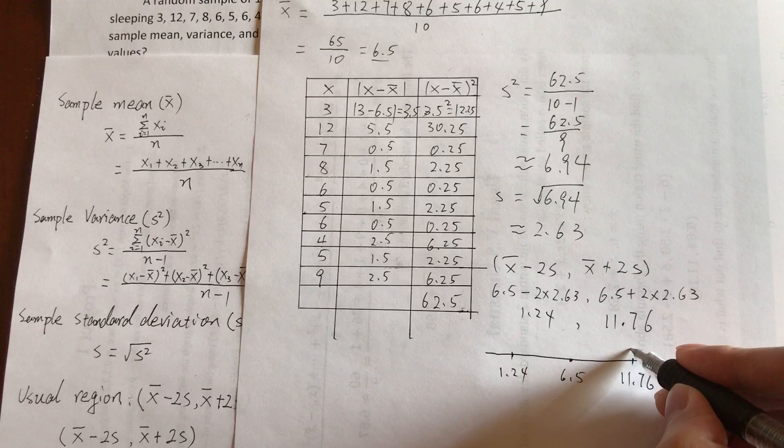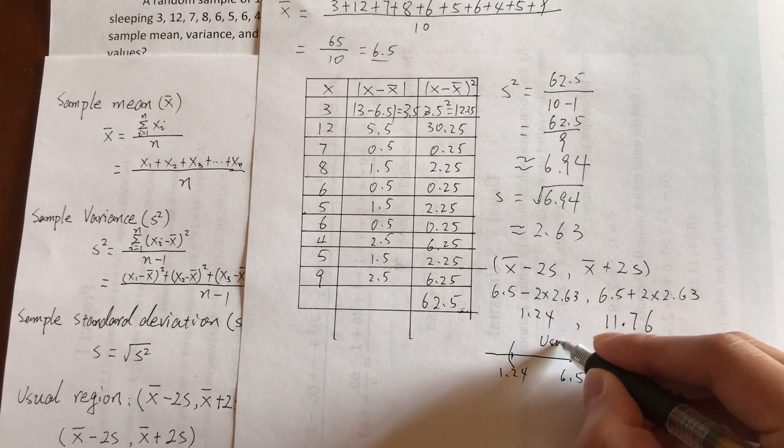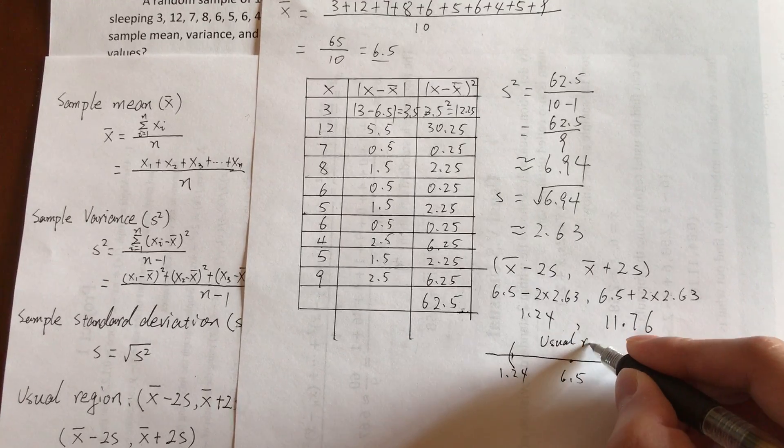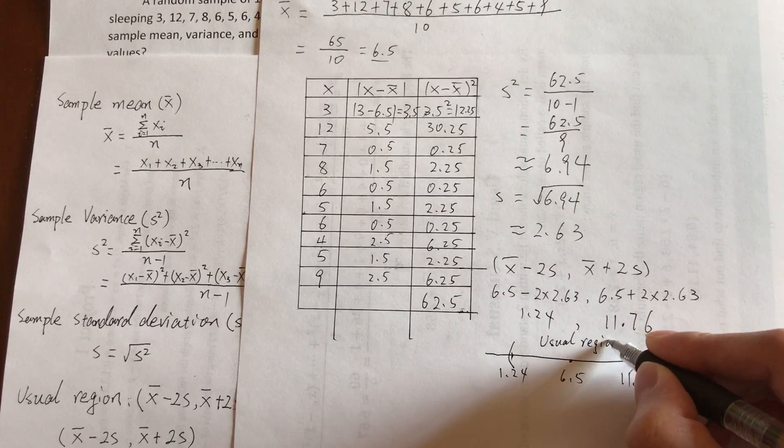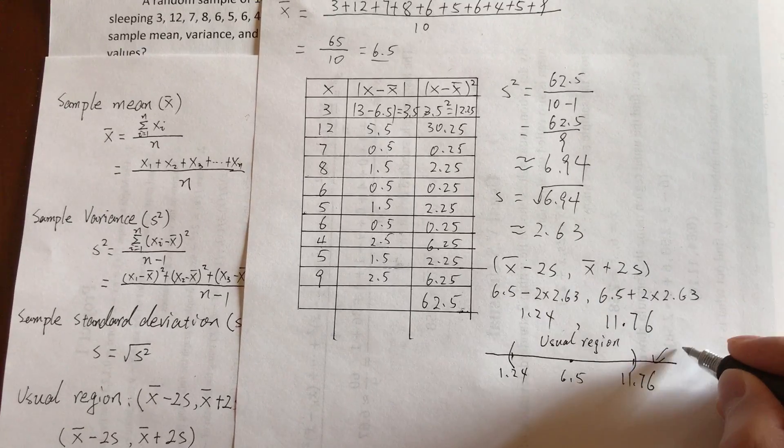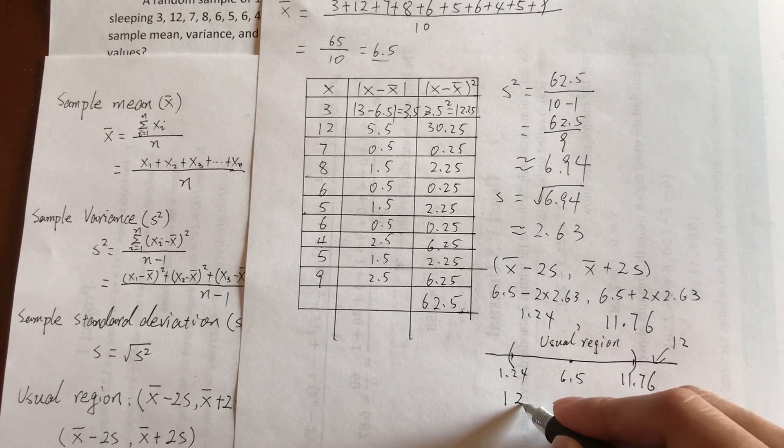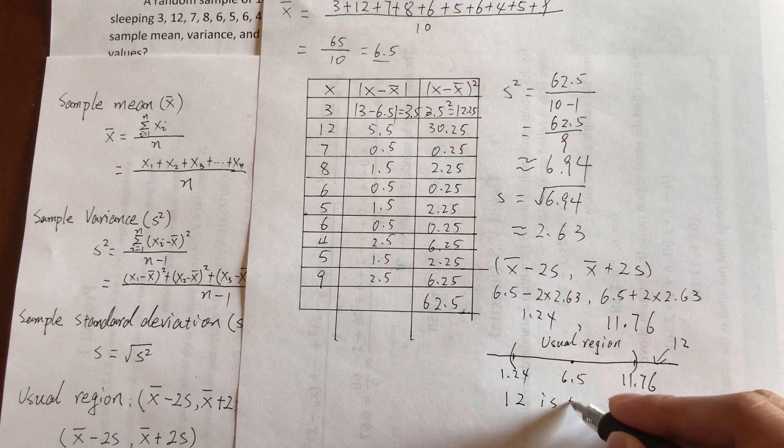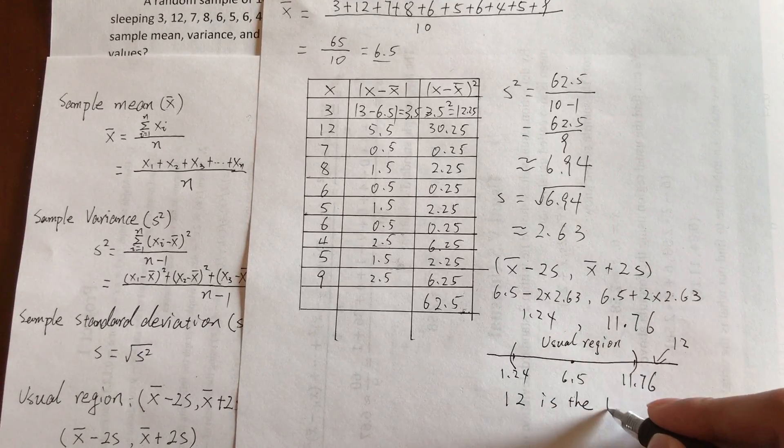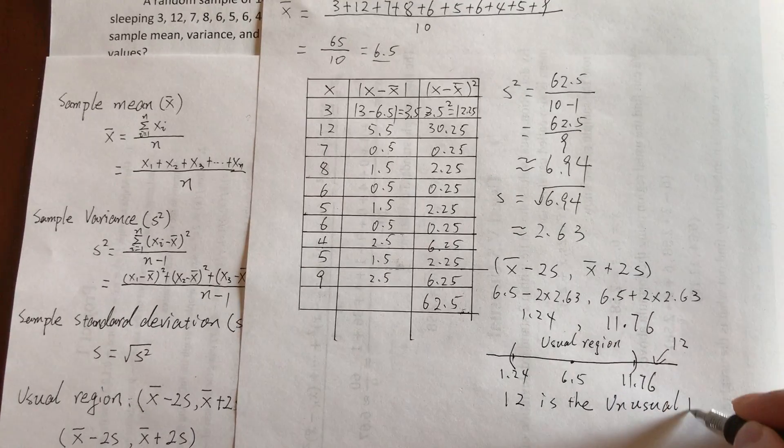Only 12 is outside here, so it means 12 is the unusual value.